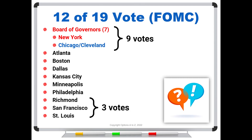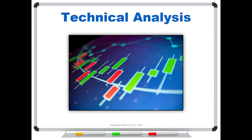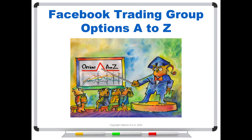Now hopefully you have a better understanding of who is casting the votes. For anyone who'd like to learn more about the art and science of options trading, please check out the Alpha Trader course, Strategy Lab, and a technical analysis course. You can find it all at optionsAtoZ.com. Also, please join us on the Facebook trading group, Options AtoZ — you can find the link in the description below.